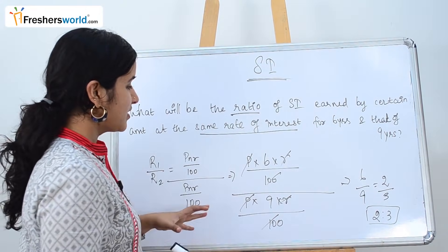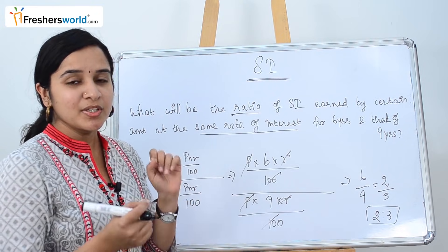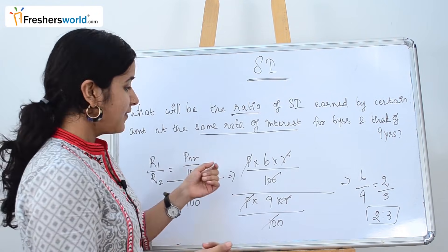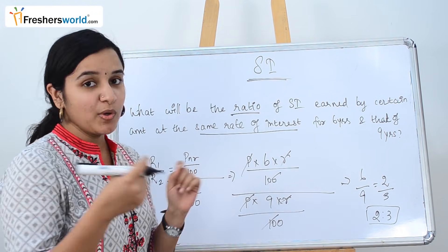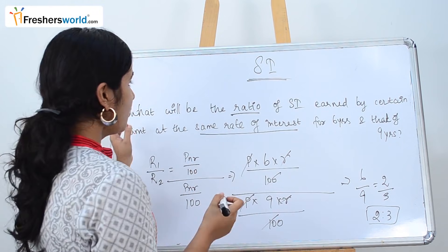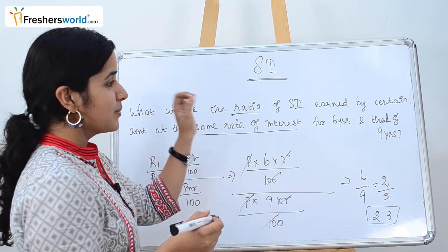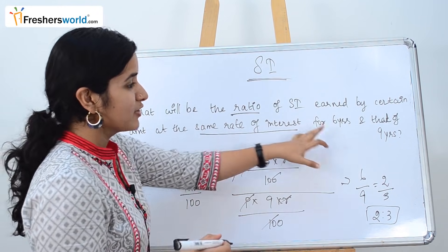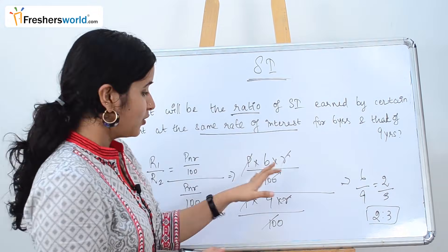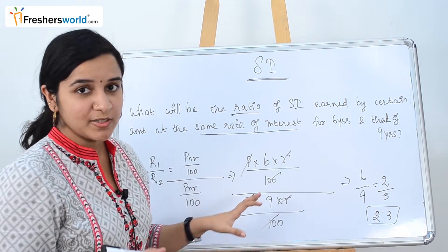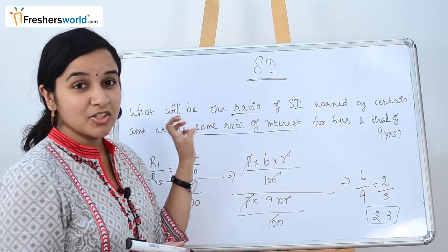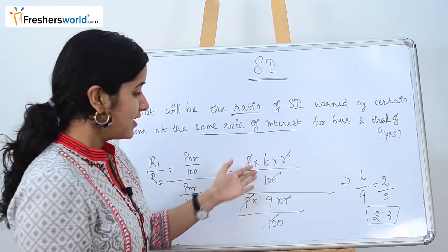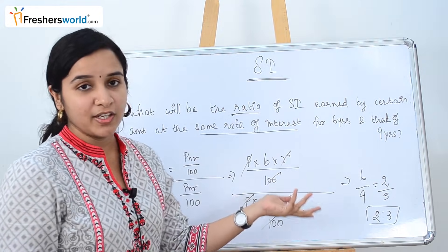Though the question didn't mention explicitly that the principal is the same, a lot of people get confused and consider P1 and P2 separately. But since the simple interest is earned for the same amount for 6 and 9 years, P will always be the same here. So P and R cancel out, and you can easily find the ratio.